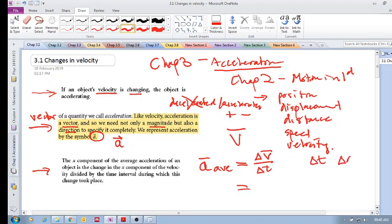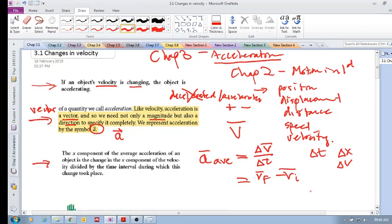if you see a delta x, a delta v, it's always final minus initial. So this will be v final minus v initial over t final minus t initial.